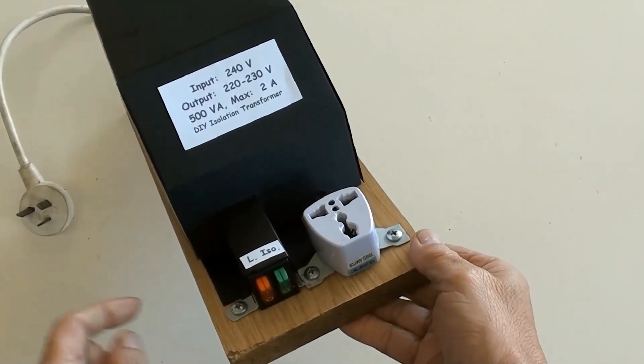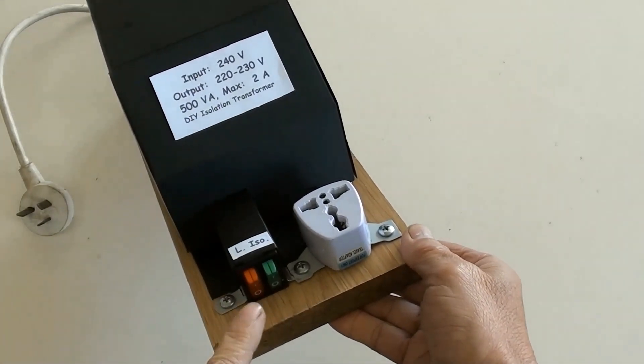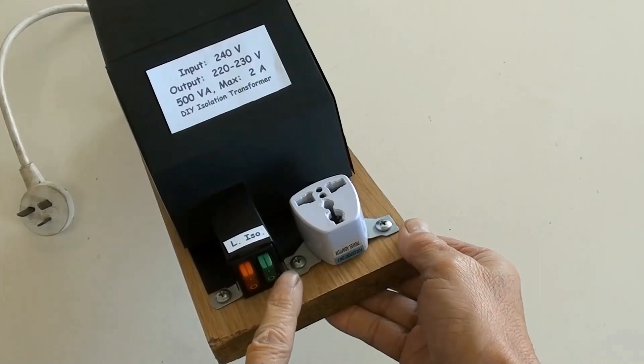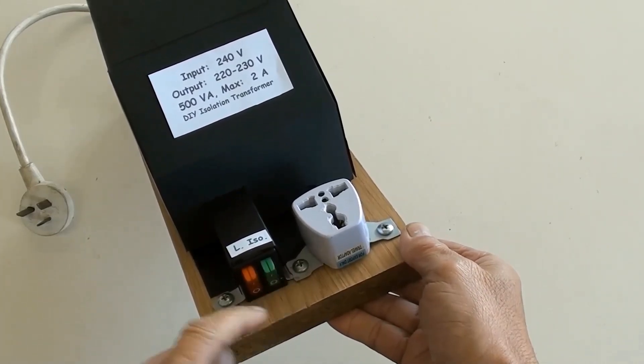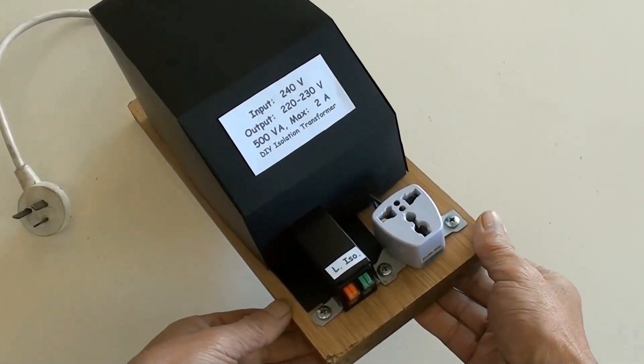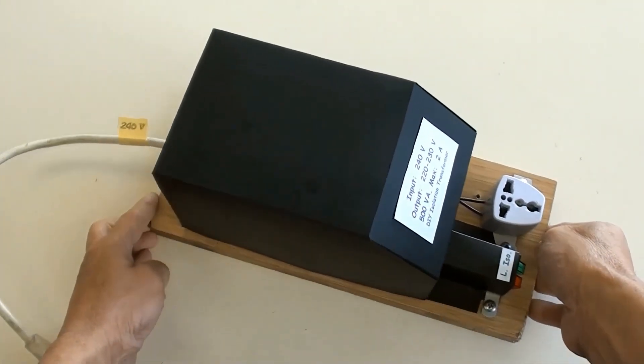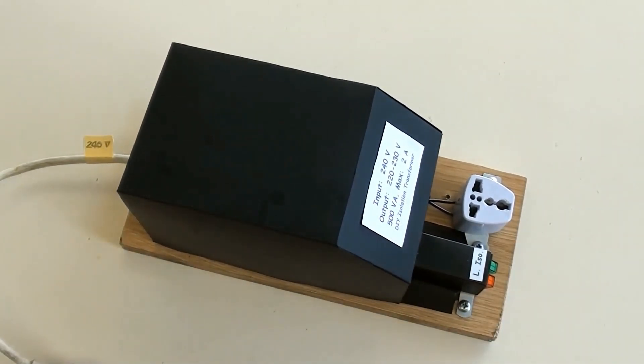There is a sticker for the isolation transformer's details. The LED switch on the left is for live. The LED switch on the right is for isolation, and there are markings on the top.